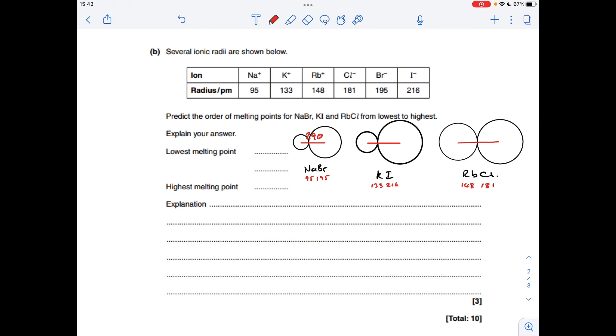I've done the same for the potassium iodide. The combined radius is 349. And for the final one, the combined radius is 329.